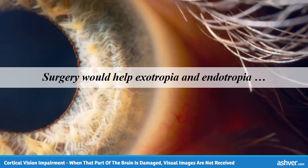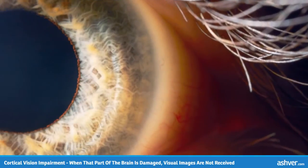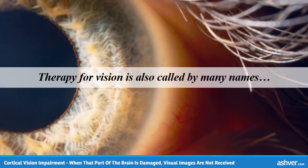I was not able to find much about what drugs might be used or in what way they would work. One interesting idea from a research study is the use of Botox for esotropia and exotropia. Therapy for vision is also called by many names: visual therapy, vision therapy, optometric visual therapy, vision training, neuro-optometric visual therapy, behavioral optometry, orthoptic therapy, and developmental optometry.